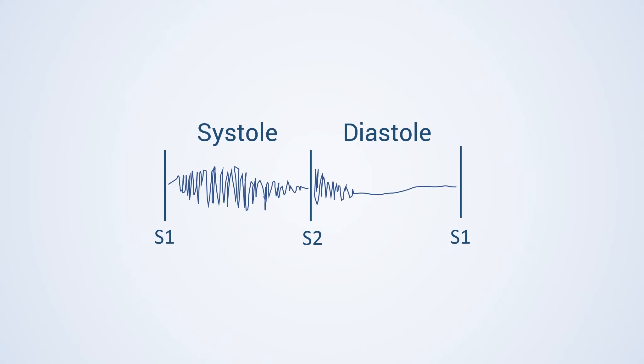As we know, heart murmurs are swishing or whooshing sounds produced by turbulent blood, usually across an abnormal heart valve or defects in its septum.